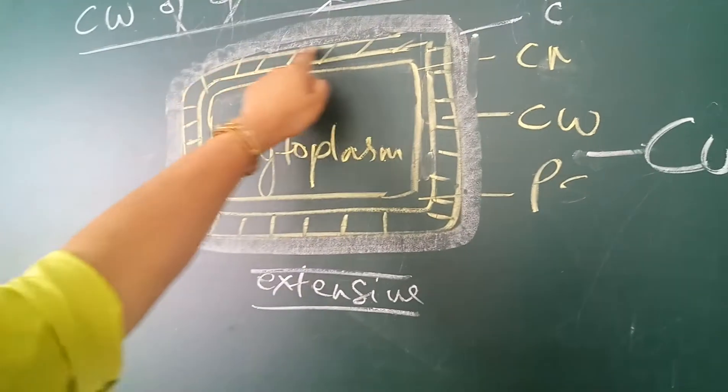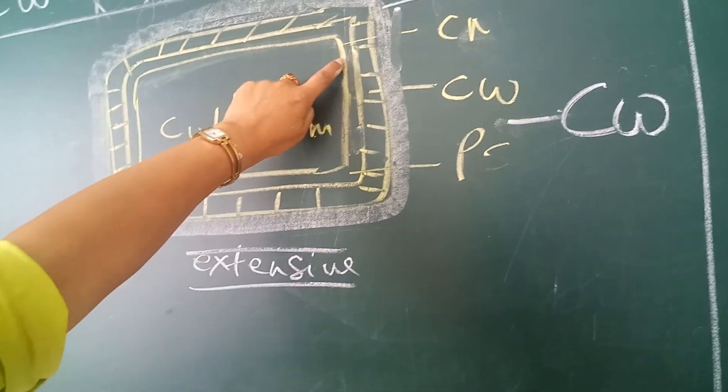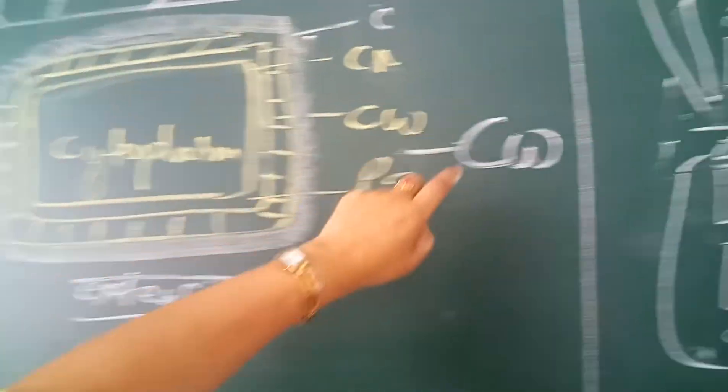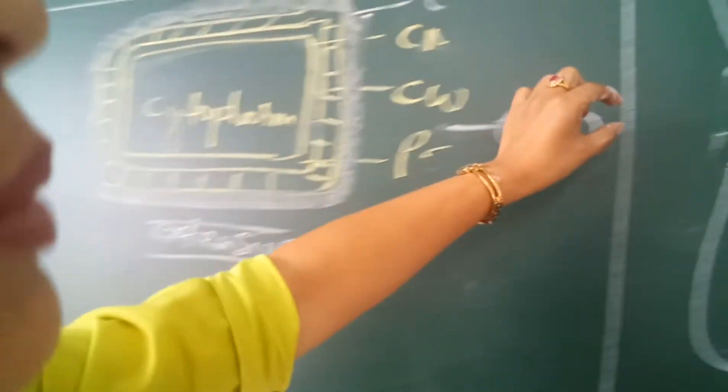Periplasmic space inside. And inside to it, the cell membrane. Look here. Magnify this one. If you magnify this cell wall, you will see this.